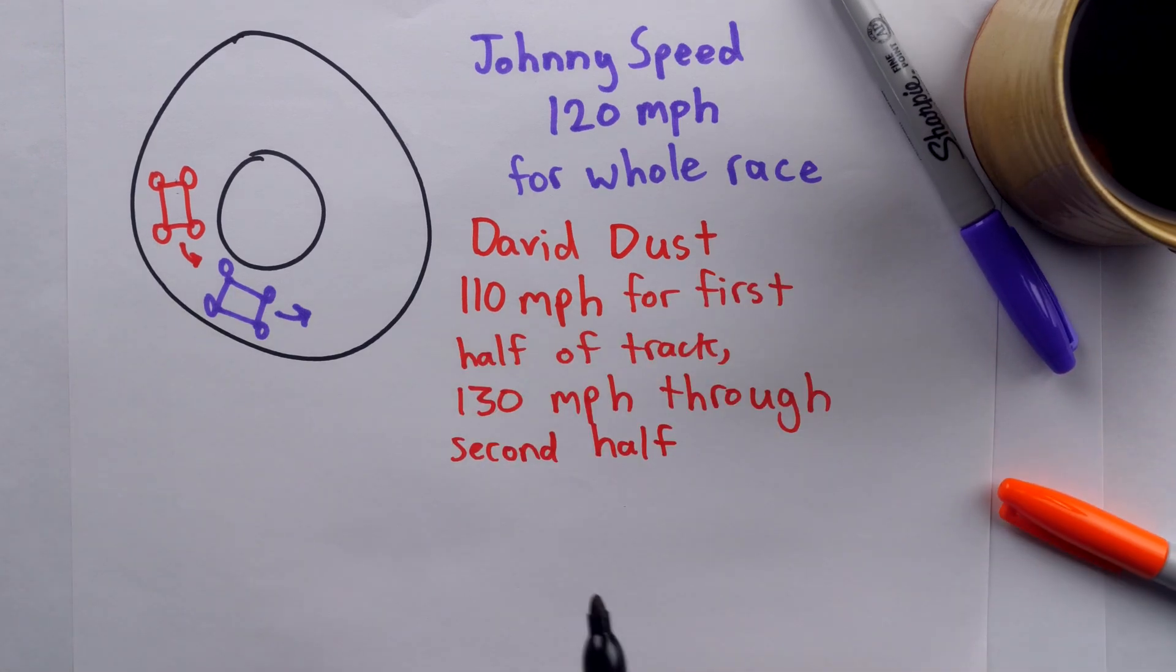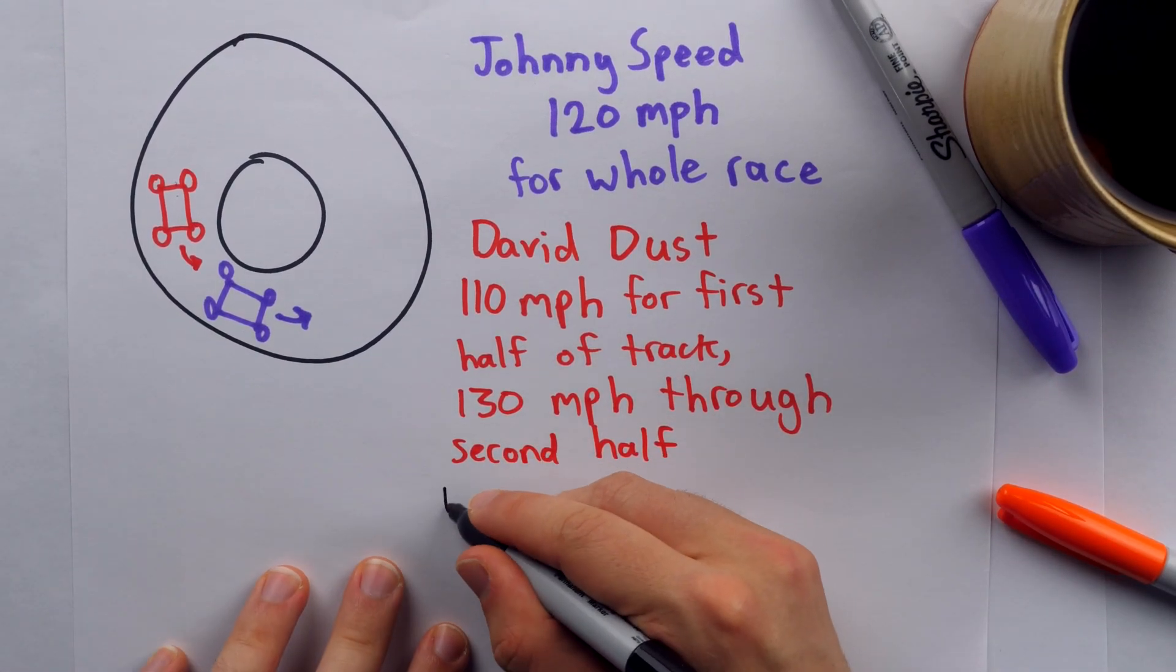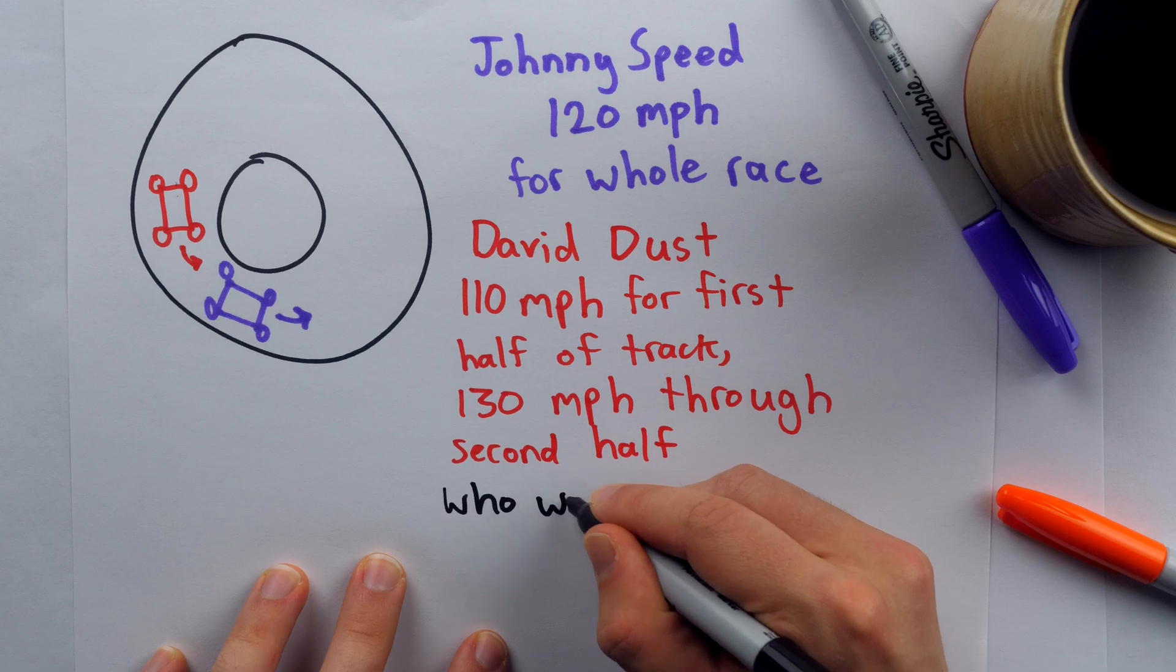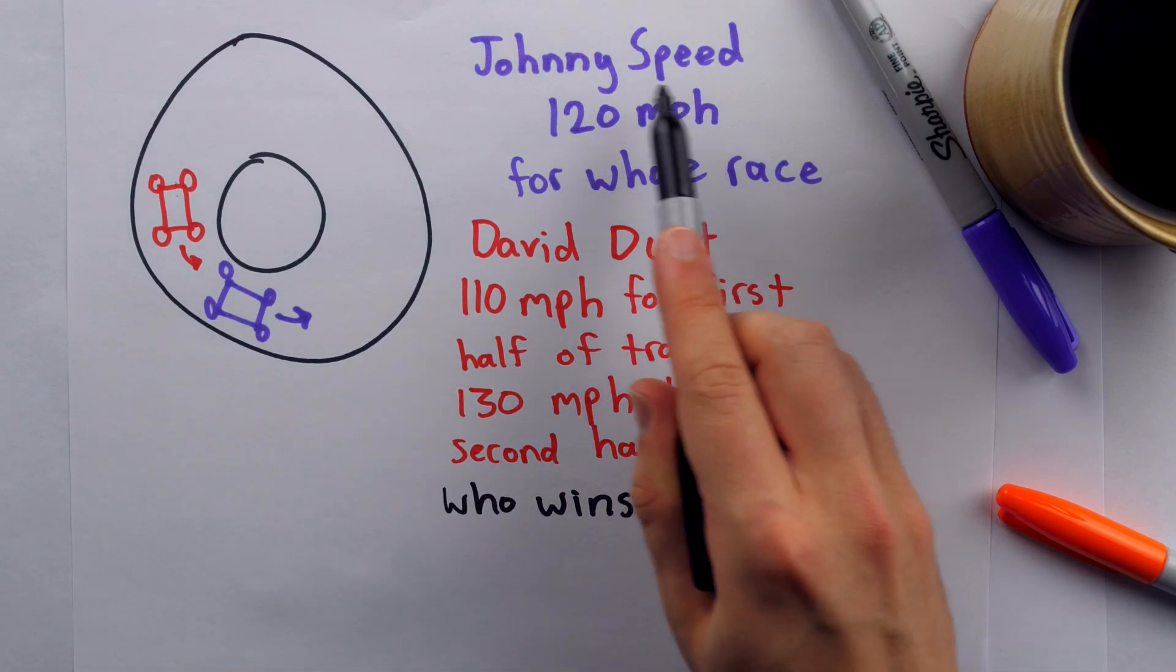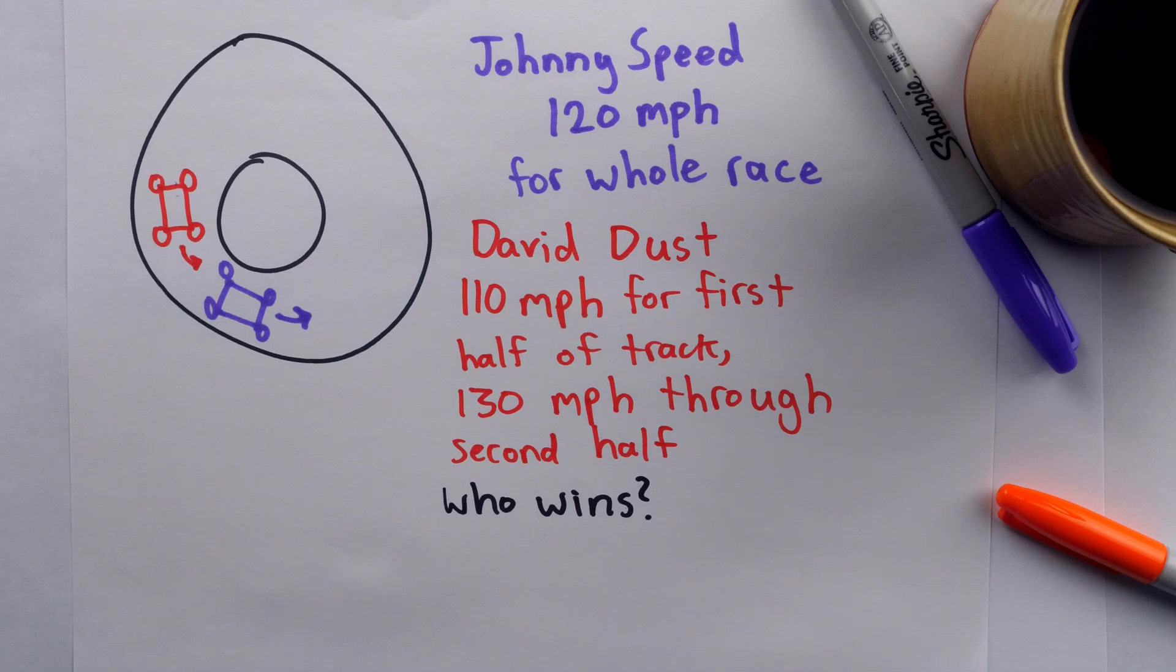So then, the question, of course, from this information is, who is going to win this race? Is it going to be Johnny Speed going 120 miles per hour the whole time, or is it going to be David Dust, who goes 110 miles per hour through the first half of the course or track, and 130 miles per hour for the second half?